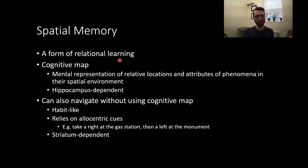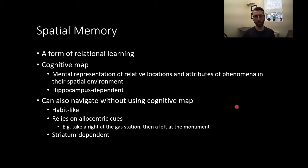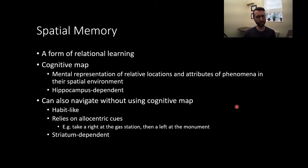Oftentimes learning starts with a more effortful, deliberative cognitive map-type strategy, where you have to think about where you are in space and where you'd like to go. With enough repetition it becomes a more habit-like, striatum-dependent strategy, where you're not really thinking about where you are in space, but automatically making decisions about where to go when you see certain things. If you've ever gotten in your car and driven to a familiar location without much memory of the drive, that's because you're relying completely on this striatum-based, habit-like learning — a sort of lower road to navigating.